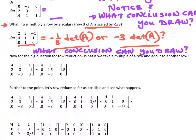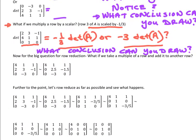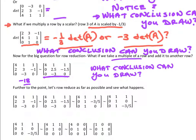So in row reduction, what if we go ahead and take a multiple of a row and add it to another row? I want you to go ahead and find the determinant of this one. We know the determinant of this one is negative 18. Find the determinant of this one here and tell me what happens. And what conclusion can you draw if we take a multiple of a row and add it to another row?